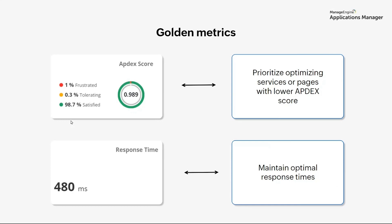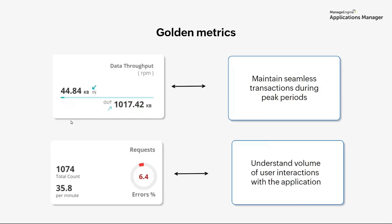The second golden metric is response time. Maintaining optimal response time for your web applications is highly crucial. Tracking response time allows you to identify pages or services causing delays and optimize them for a smoother browsing and shopping experience. The next golden metric is data throughput. High data throughput ensures that customer orders, payments, or interactions are processed swiftly — and in a regular application, it helps ensure transactions are seamless even during peak periods. The next metric is requests — monitoring the number of requests helps you understand the volume of user interactions, and by tracking requests over time, you'll be able to identify user patterns, peak traffic periods, and potential spikes in demand.